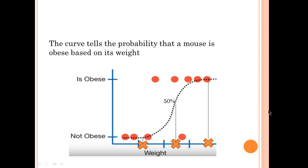Hence, the curve here tells the probability that the mouse is obese based on its weight.